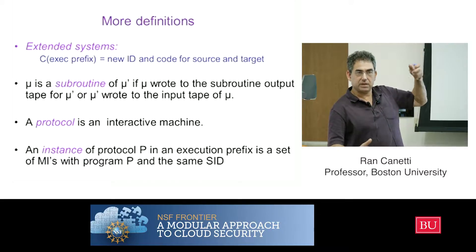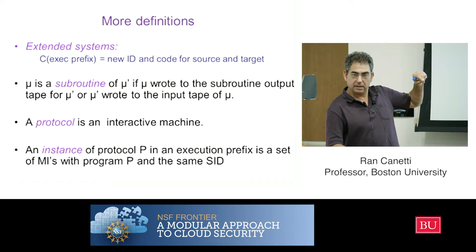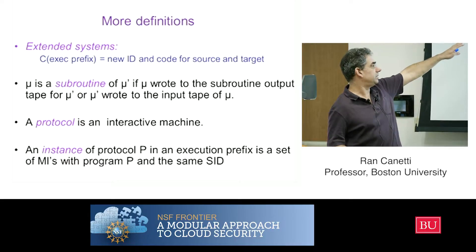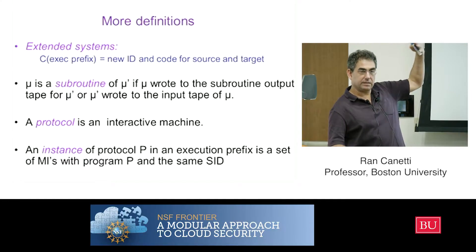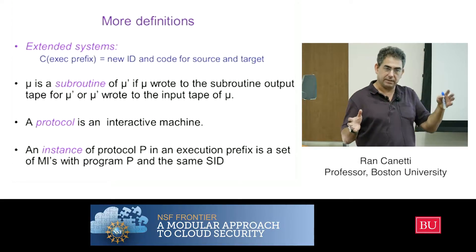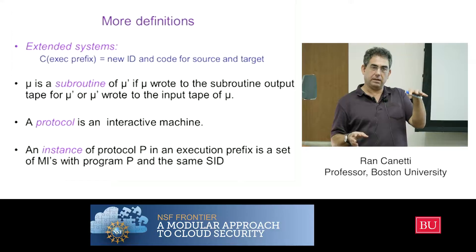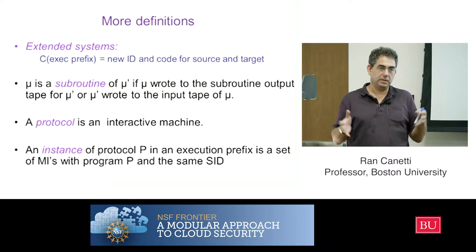It kind of seems hard to try to delineate what it is. I think the only thing that makes sense is very simple syntactic basic things. Say the protocol is just a machine, just a code. This is going to be the program of all the machines that are in this protocol — they all run the same program. They may have different roles or whatever. So a protocol is the static program for all the machines that want to be in a protocol.